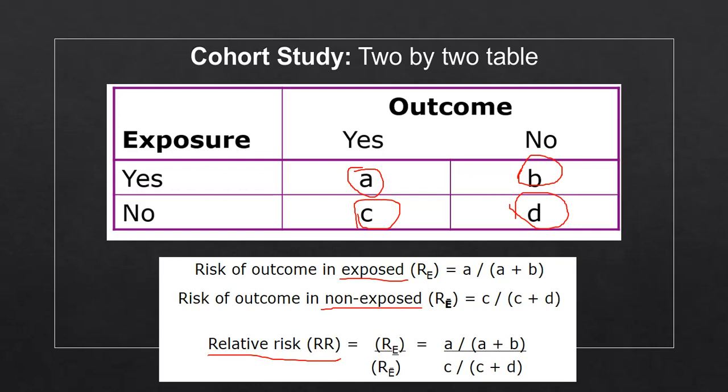And in order to do that, you have these equations here. Essentially, it's A divided by A plus B. So you have A divided by A plus B is equal to the risk of outcome in the exposed group.